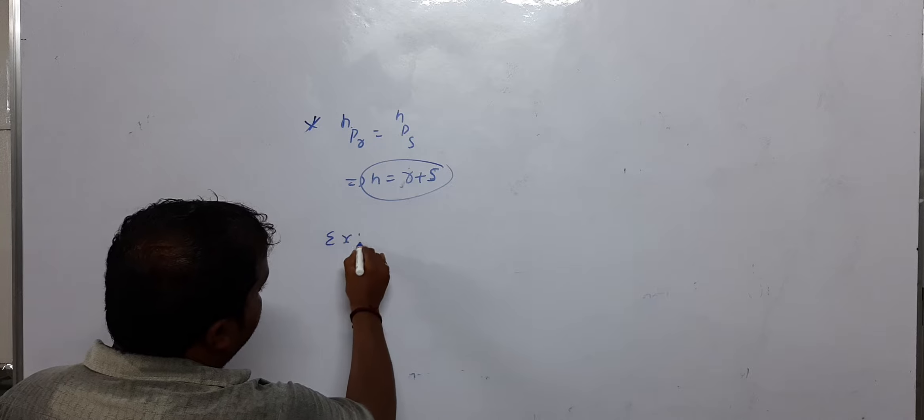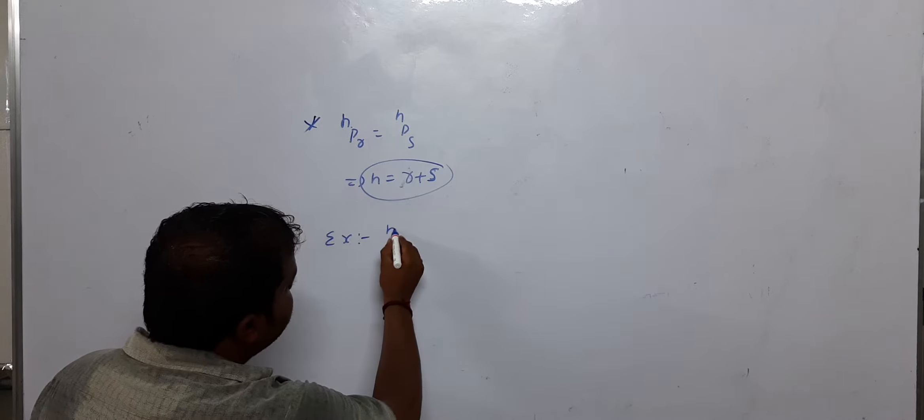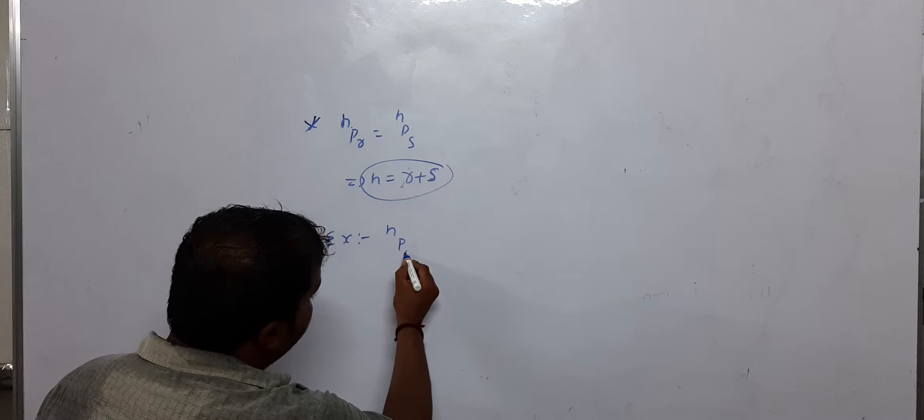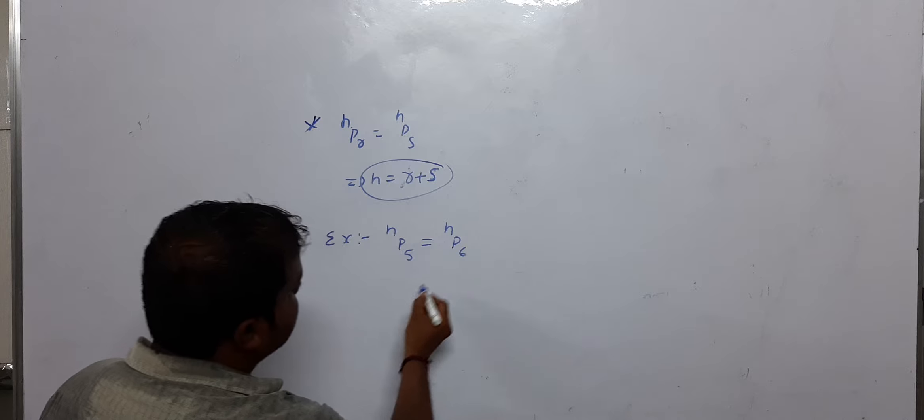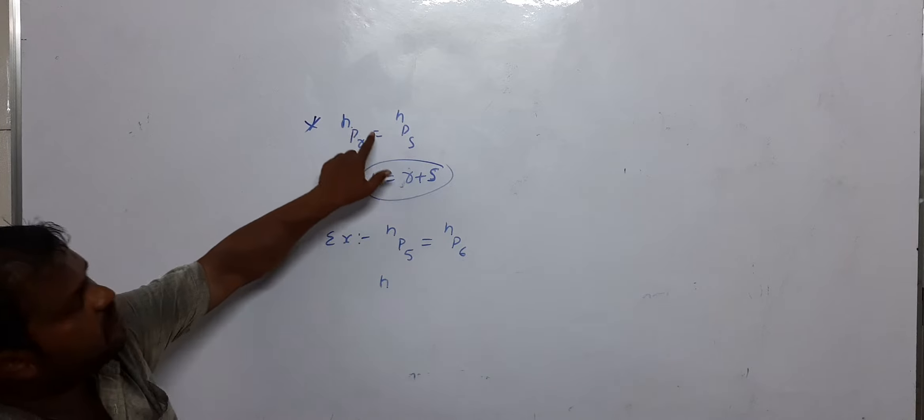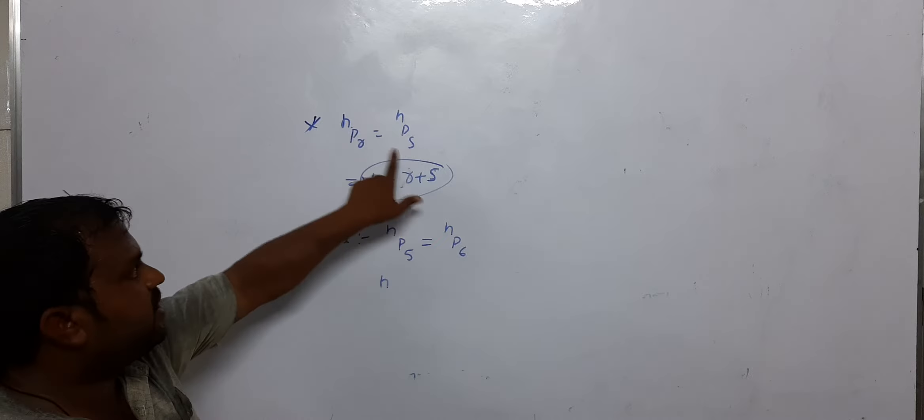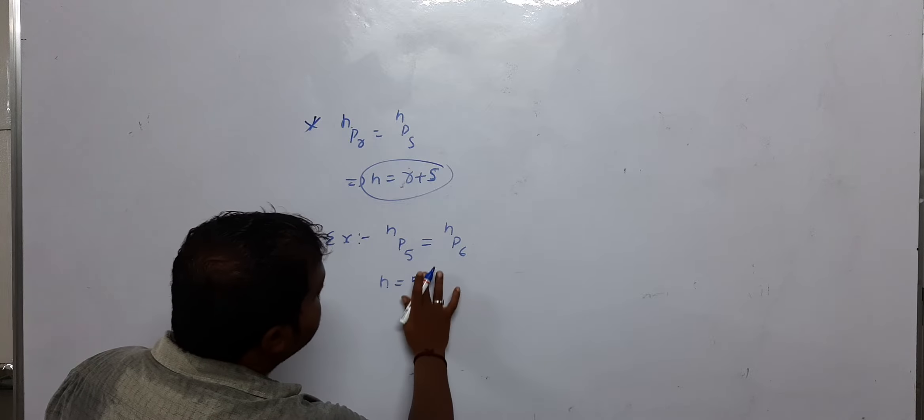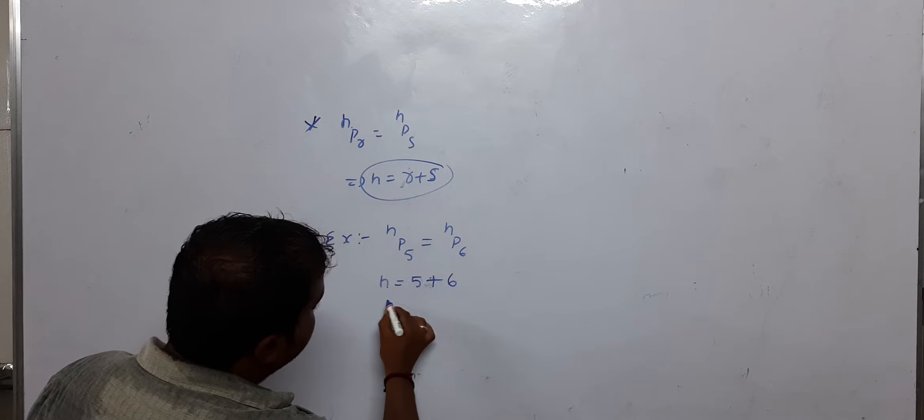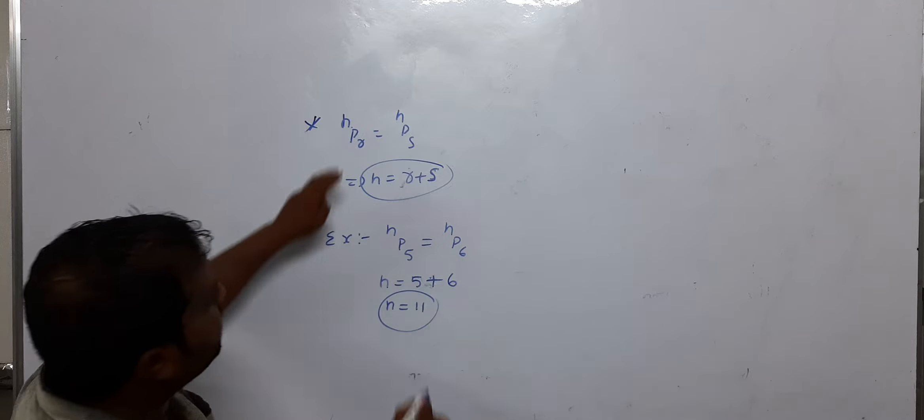Okay, example: nP5 is equal to nP6. Using this formula, N is equal to 5 plus 6, so N is equal to 11.